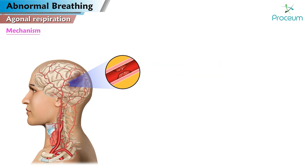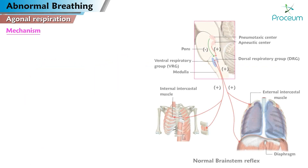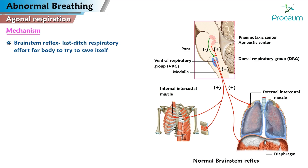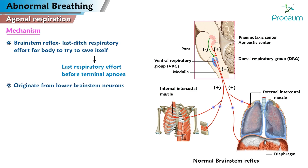Mechanism of agonal breathing. Agonal breathing can be caused by anything that cuts off the blood supply to the brain. The brain gets oxygen from the cells in blood. Agonal respiration is thought to be a brainstem reflex providing a last-ditch respiratory effort for the body to try to save itself. It is thought of as the last respiratory effort before terminal apnea. Agonal breaths are thought to originate from lower brainstem neurons as higher centers become increasingly hypoxic during cardiac arrest.